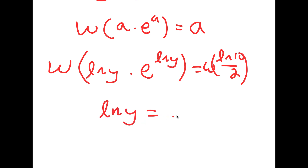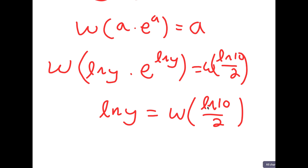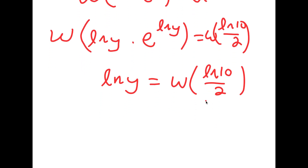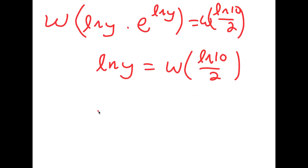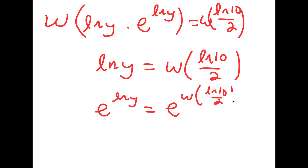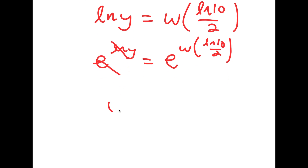So I'm left with ln y equals the Lambert W function of ln 10 over 2. Now, if I take e to the power of both sides, I get e to the power of ln y is equal to e to the power of W of ln 10 over 2. These two cancel out, so I'm left with y is equal to e to the power of W of ln 10 over 2.